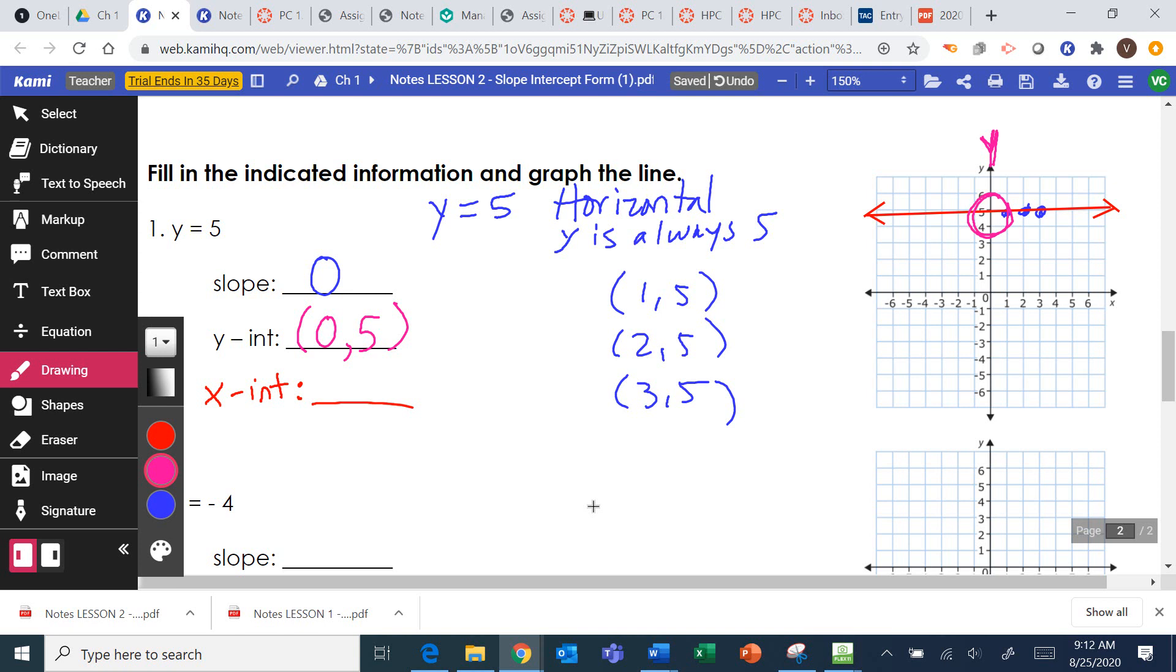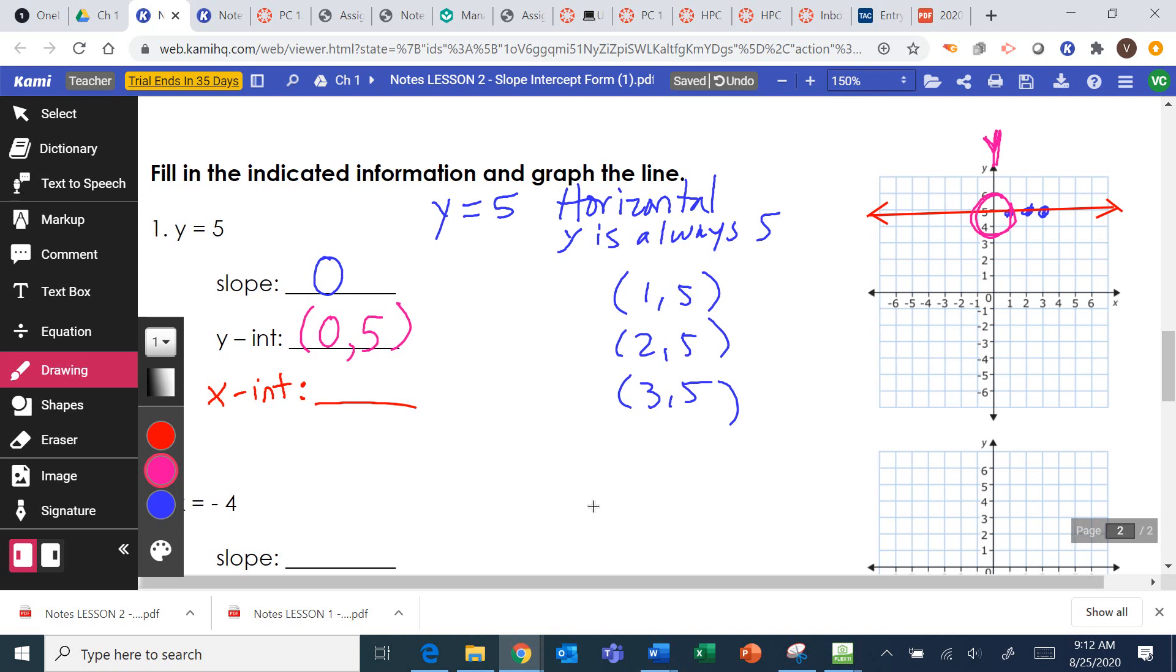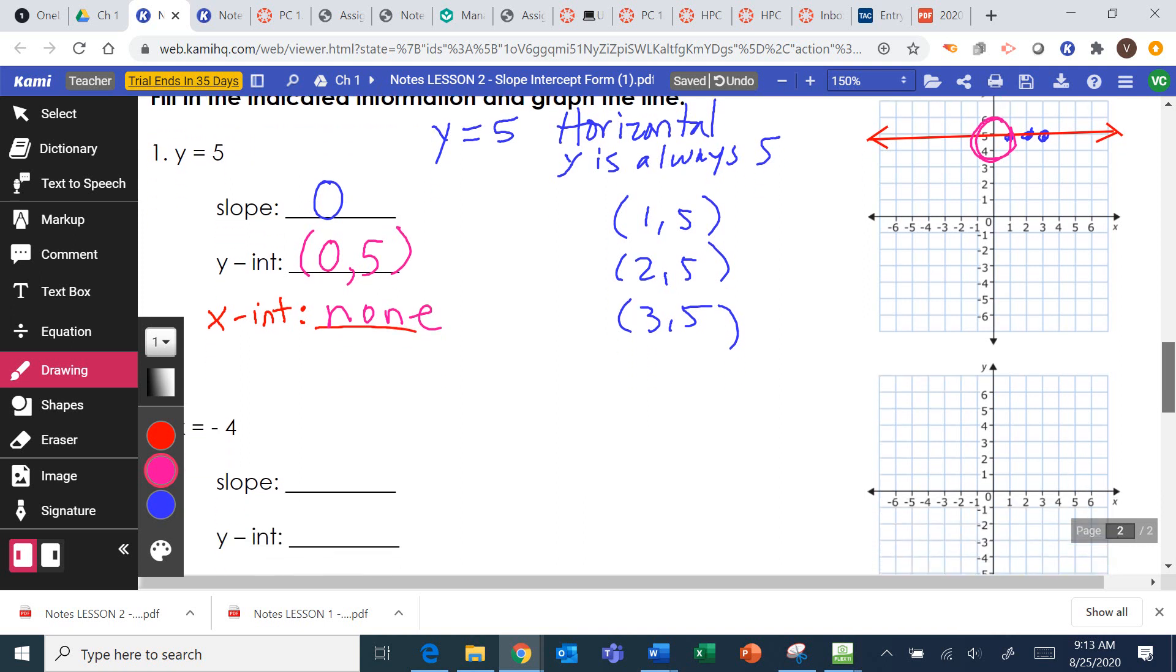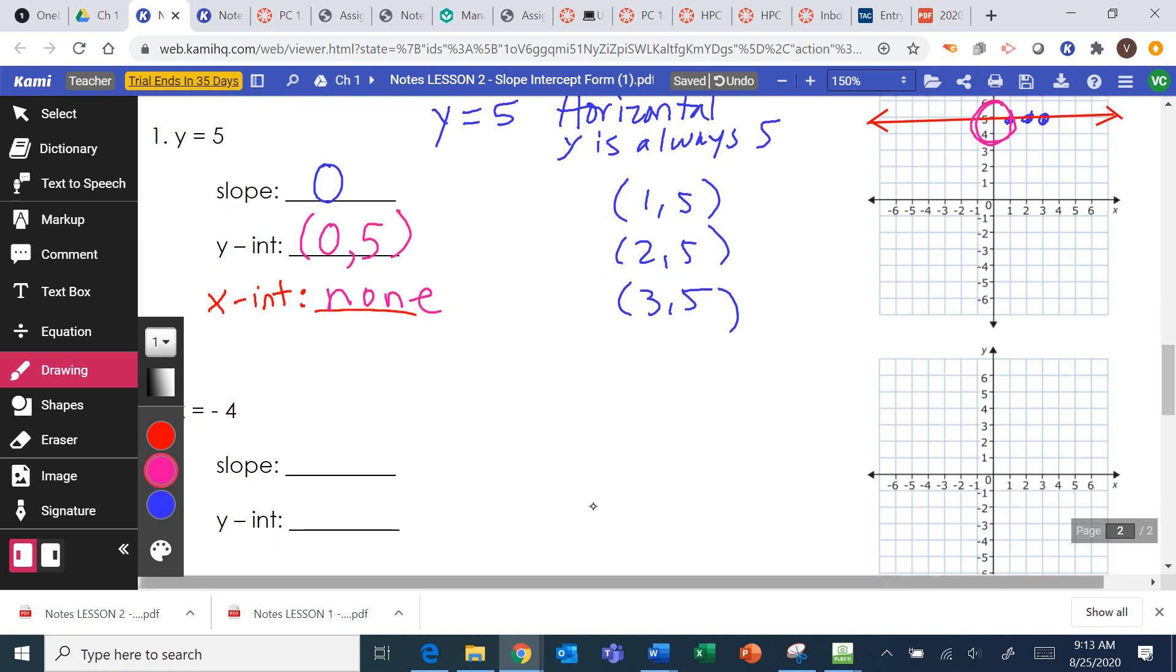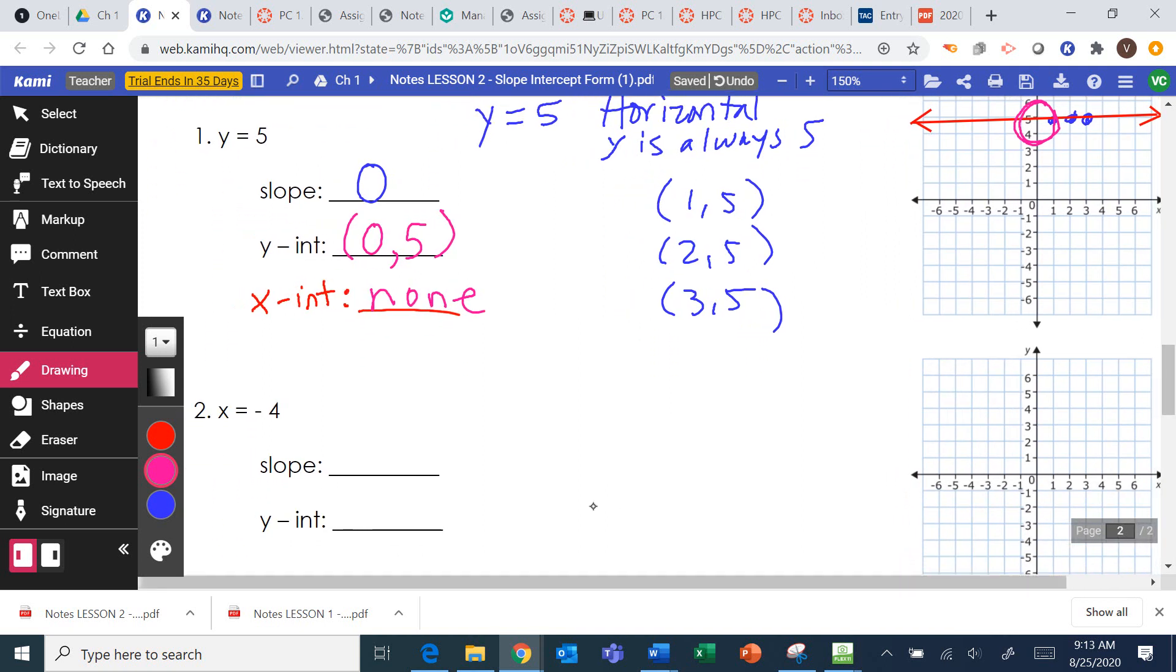Now the x-intercept. Where does this graph cross the x-axis? It doesn't. So we write on Canvas, we write none. There isn't one. So we'll simplify that. We'll all write none. It's okay to write none. Alright, next question. x equals negative 4.